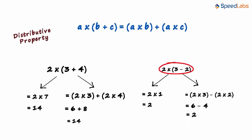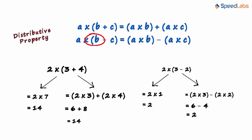How do we write this in variable terms? We can write it as A multiplied by B minus C equals A multiplied by B minus A multiplied by C.